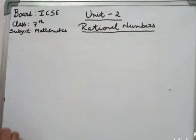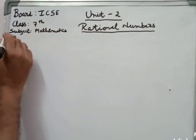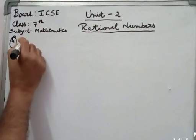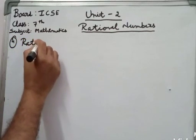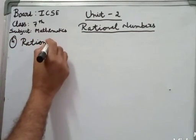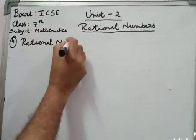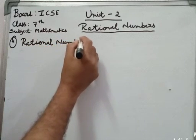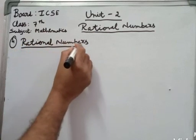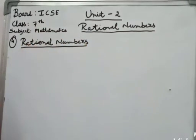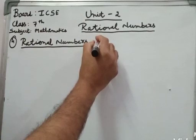The fourth type is rational numbers. Rational numbers are denoted by Q.